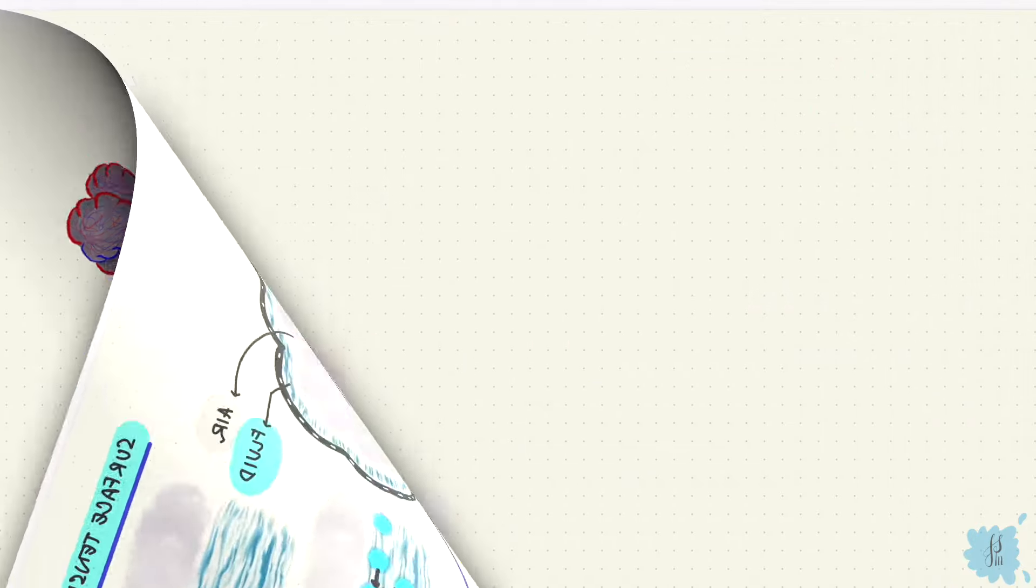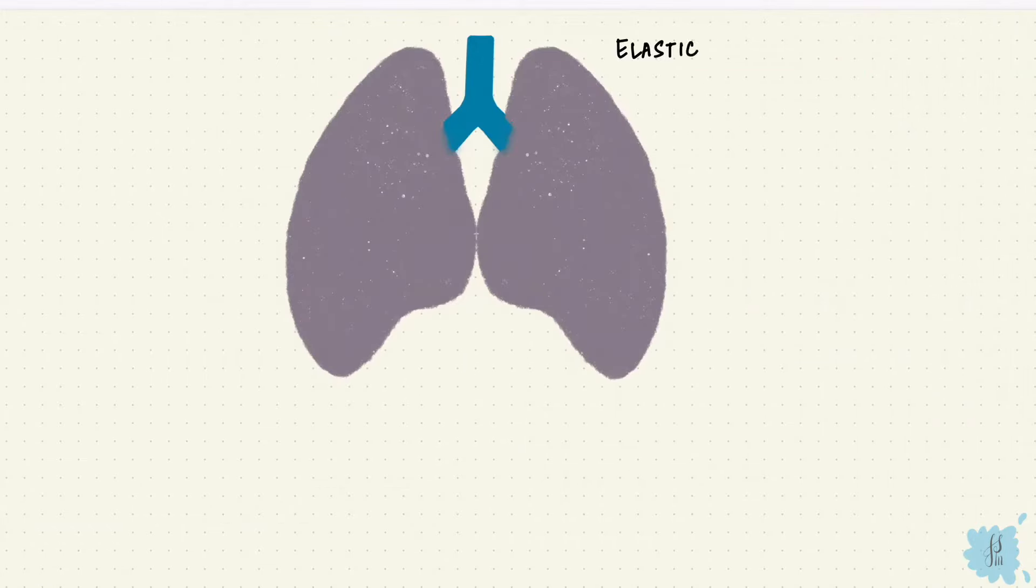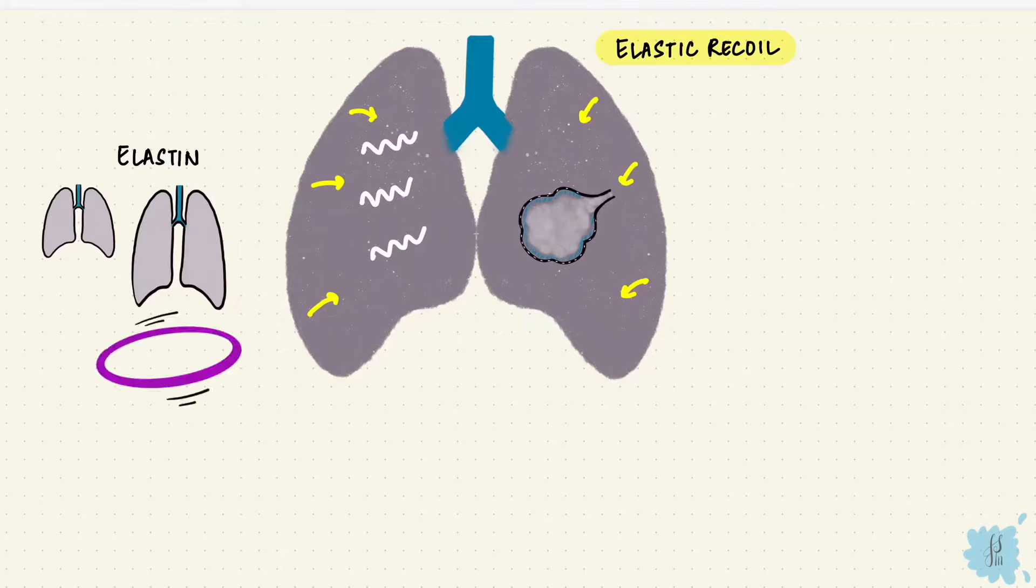The surface tension is an elastic force, so it's one of those things that causes the lungs to recoil. The other thing is elastin in the lung tissue which stretches when the lung stretches. So these oppose stretching of the lung, and that stretching is compliance. So high surface tension, low compliance.